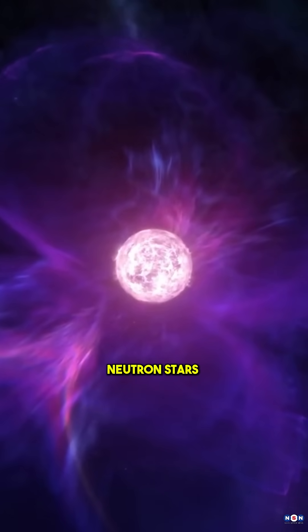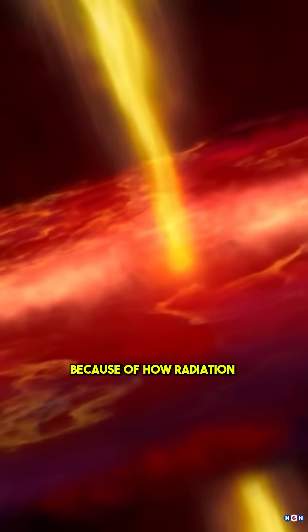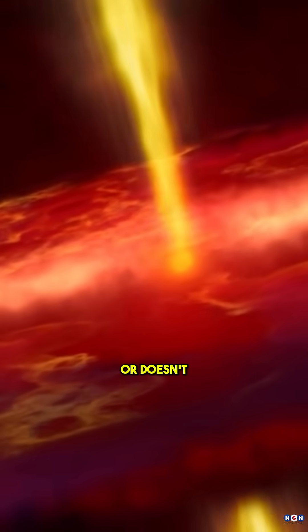It's all about density. Neutron stars and black holes might actually vanish at the same rate because of how radiation escapes their surfaces, or doesn't.